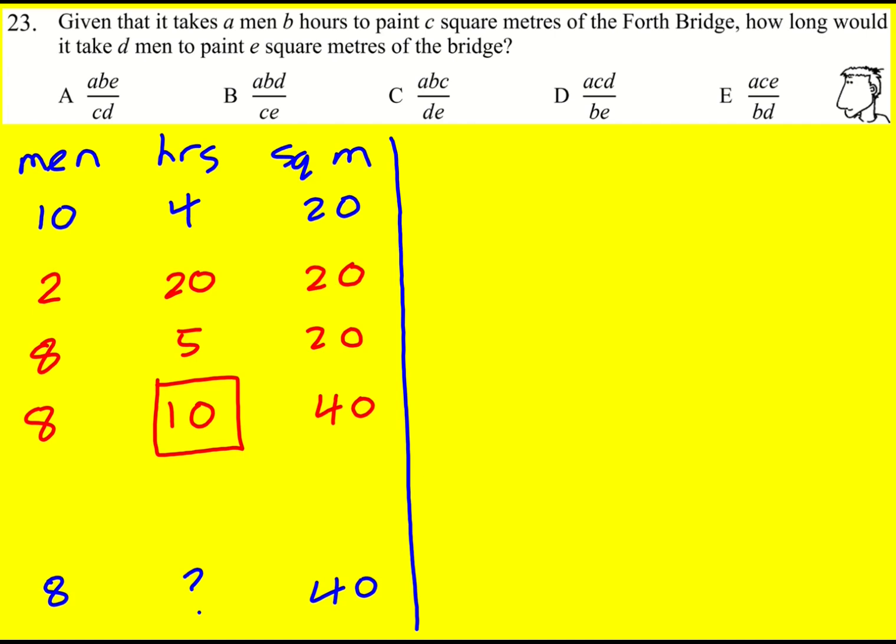We're going to use the same approach now, but we're working algebraically. So again, men, hours and square meters, but this time it takes A men B hours for C square meters, and we want to get to how long it takes D men to do E square meters.